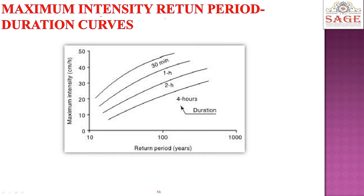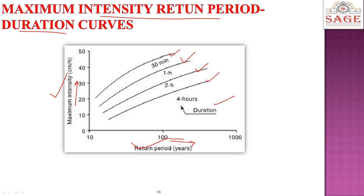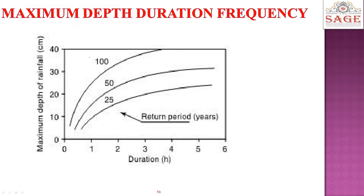Next graph: maximum intensity vs. return period vs. duration. Here we have taken maximum intensity on the y-axis and return period on the x-axis (instead of duration). The durations — 30-minute, 1-hour, 2-hour, 4-hour rainfall — are shown as separate curves. From this graph we can see, for example, for a 100-year return period with a 30-minute duration, approximately 45 cm per hour rainfall intensity is expected. This data can be analyzed from the graph.